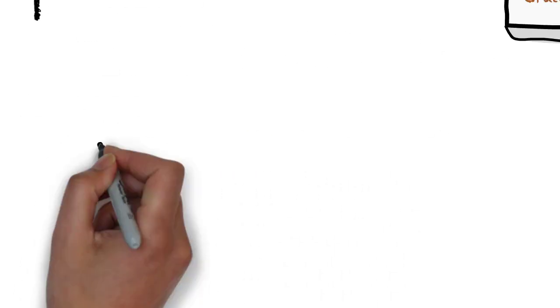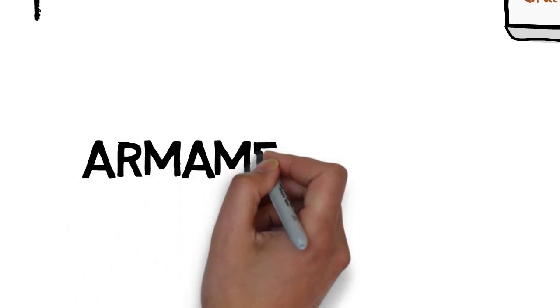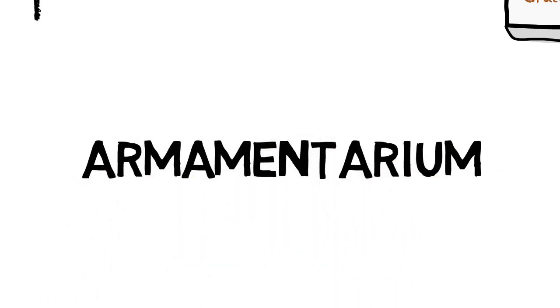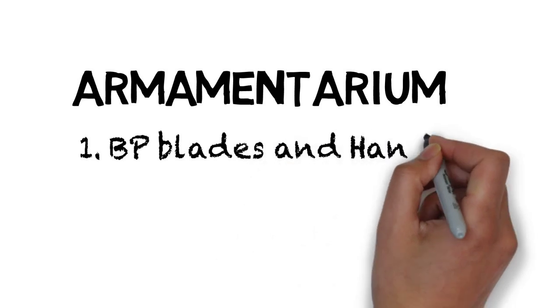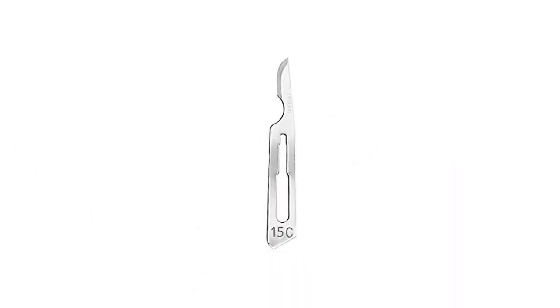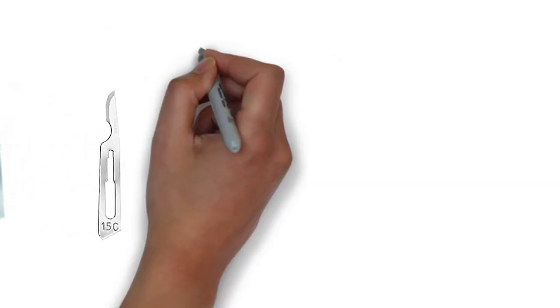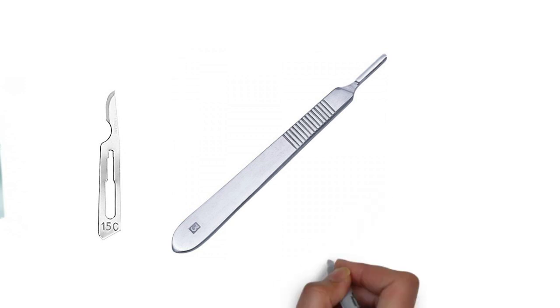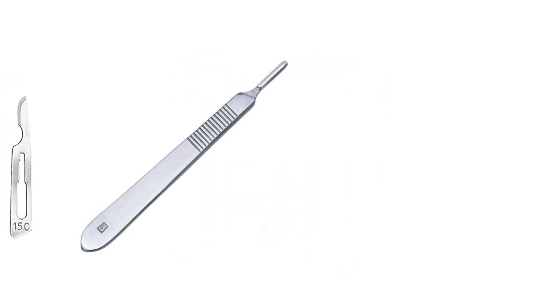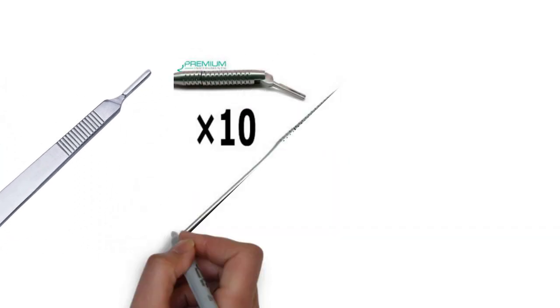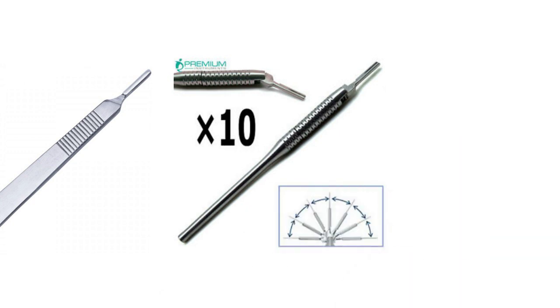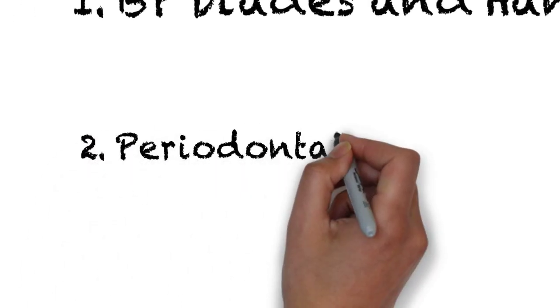Finally, discussing the armamentarium required: as of now we have a vast range of instruments that are available in the market. I will enlist a basic list which is a must-have. Firstly, we require BP blades and handles. The 15, 15C, and 12D are the common blades; my favorite is the 15C. The BP handle number 3 is the one which is regularly used. There are various types of handles such as the flat handles, the round handles, straight shank, contra-angle; you can use the ones as per your comfort.